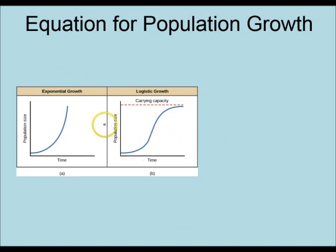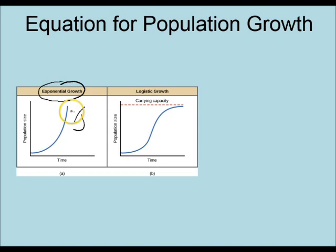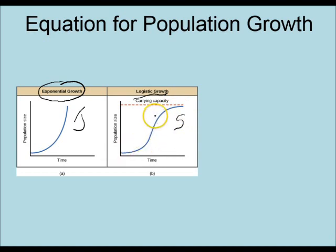If we look at population growth graphs, we have two graphs. The first is exponential growth — when a population grows at a steady rate, producing a J-shaped curve. The other type is logistic growth, which has an S-shaped curve. The population grows exponentially at first, but then something starts acting on the population and flattens it out. That is logistic growth.